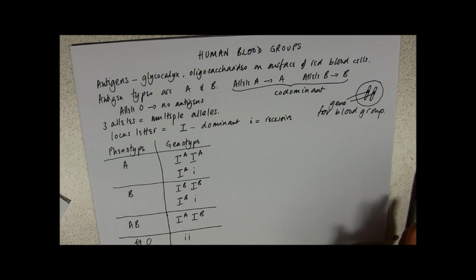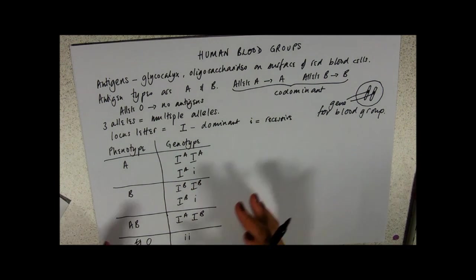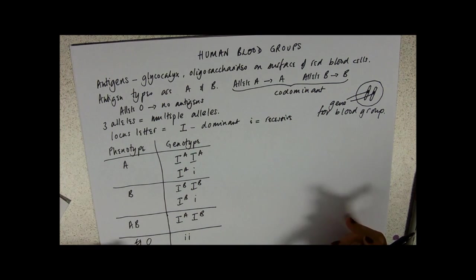There is also another antigen on red blood cells called the rhesus factor that we're not going to deal with. That's just a straight, there are two alleles. You've got the allele for the antigen or you've got the allele for no antigen. So you'll hear people say that they're, I am O rhesus positive. I have the rhesus antigen but I don't have any of these AB antigens on my blood cells. O negative would mean that they haven't got any of those antigens at all.